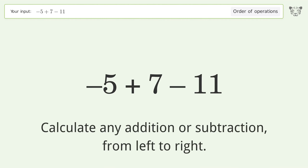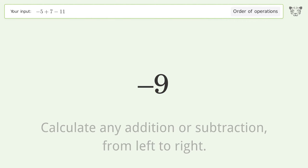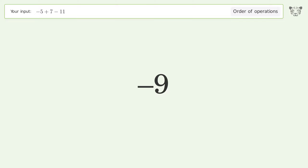Calculate any addition or subtraction from left to right: negative 5 plus 7 equals 2. Then, 2 minus 11 equals negative 9. So the final result is negative 9.